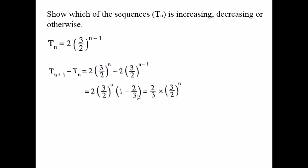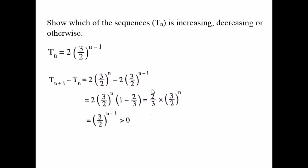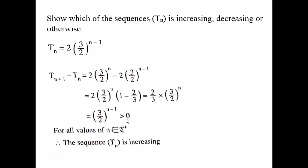So T(n+1) - T(n) = 2 × (1/3) × (3/2)^n = (2/3) × (3/2)^n, which simplifies to (3/2)^(n-1). Since (3/2)^(n-1) is always positive for any positive integer n, the difference is always positive. Therefore, the sequence is increasing.